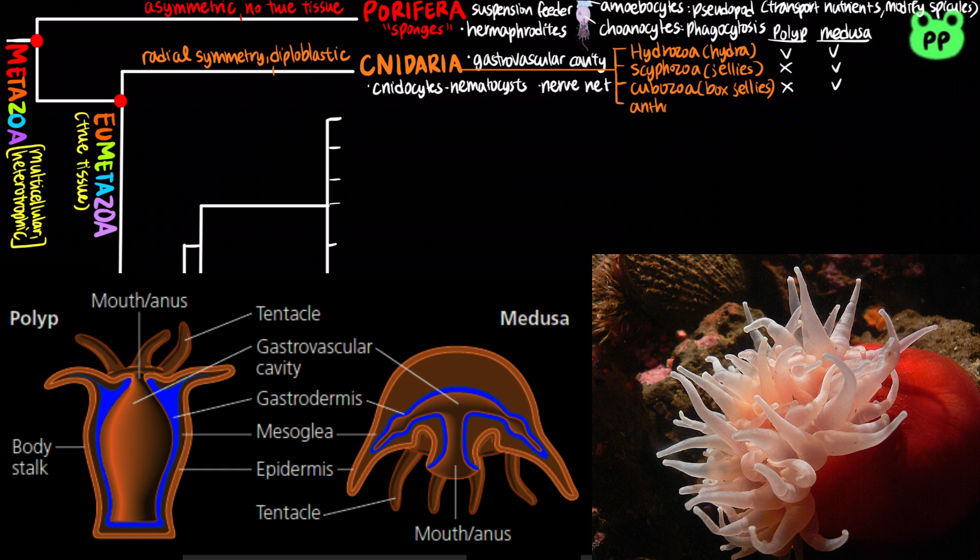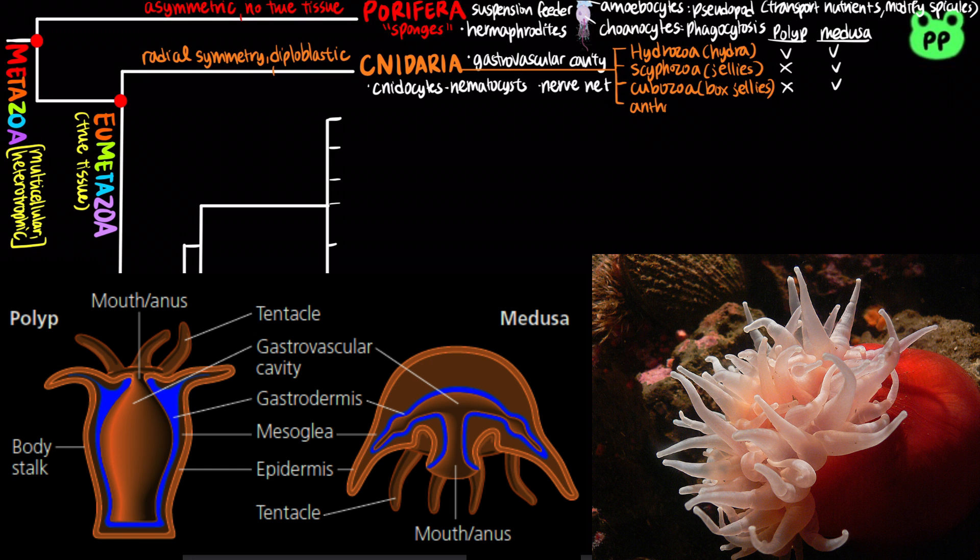The class Anthozoa includes sea anemones and most corals. They are marine animals with a polyp body plan and lack a medusa stage. They are mostly sessile and form colonies.